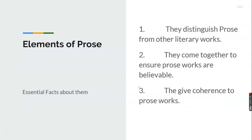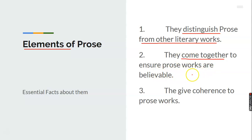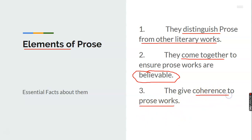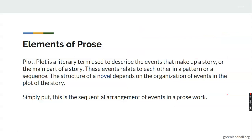Let's go to what we have for today — elements of prose. These elements distinguish prose from other literary works. They come together to ensure prose works are believable, and they give coherence to prose works — that is one of the key importances of these elements.